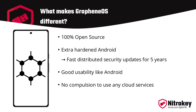GrapheneOS is a hardened Android and includes fixes for a large number of security vulnerabilities not yet addressed in stock Android. Security updates are distributed at lightning speed and are guaranteed for five years, instead of the usual two to three years. In terms of usability, GrapheneOS is Android — neither unfamiliar nor complicated.